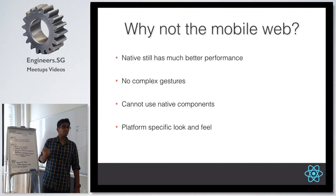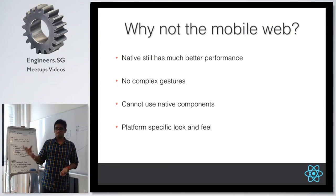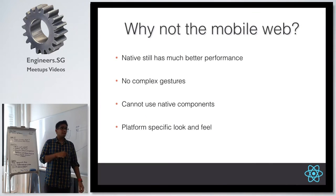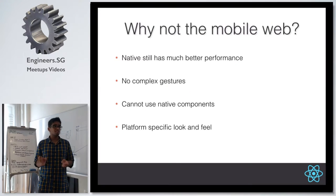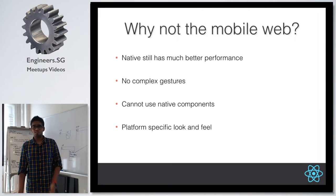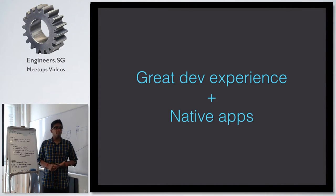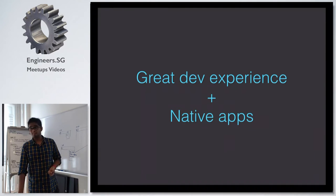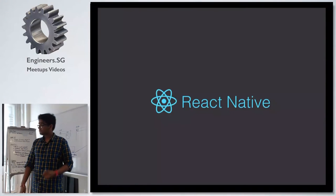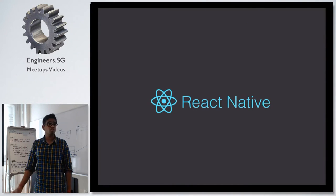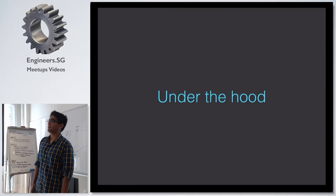Another reason is that you can't use native components on the web. Android does a great job with its calendar widget and time picker — it shows a clock where you can drag and select the time, which is a familiar interaction for Android users. If you put that on iOS it will not work. If you want native components on websites, you need to make JavaScript mockups, which isn't a great experience. What React Native is trying to do is get the great developer experience of web development and apply it with native components so you can build amazing native apps.